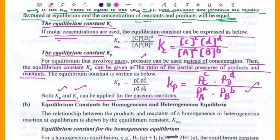In this lesson, we covered: deriving the equilibrium constant Keq, and KC and KP for gaseous reactions, as well as the equilibrium constant for homogeneous and heterogeneous equilibrium. See you in the next lesson. Bye-bye.